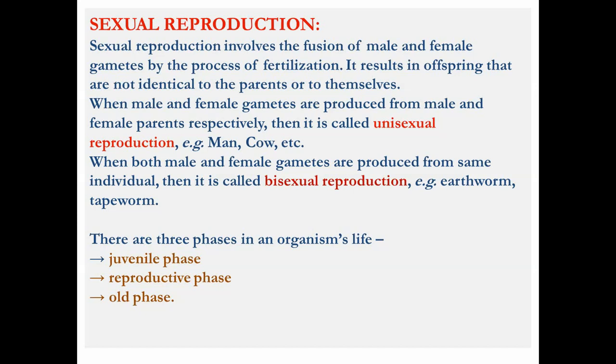Sexual reproduction basically involves both parents — male and female. We already discussed the differences between sexual and asexual reproduction. In sexual reproduction, gametogenesis occurs by meiosis — that is gamete formation — then fertilization takes place, then zygote formation, then embryogenesis and development of the fetus. There are different types of events taking place in sexual reproduction, which we will discuss later in detail.